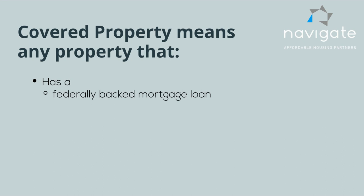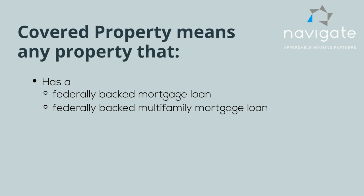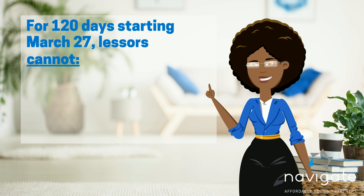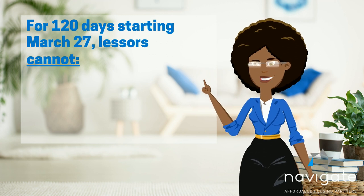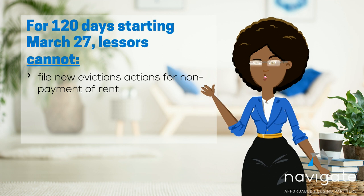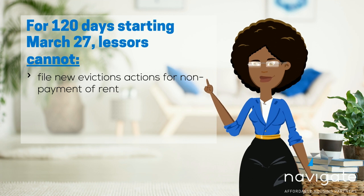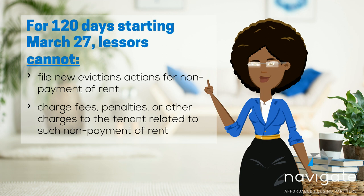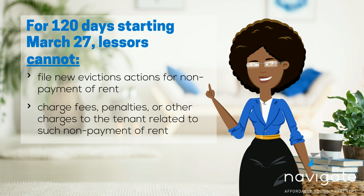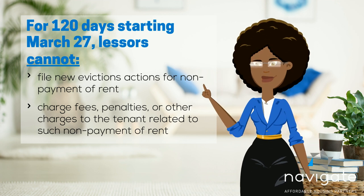It also includes any property that has a federally-backed mortgage loan or federally-backed multifamily mortgage loan. For 120 days starting March 27th, lessors cannot file new eviction actions for non-payment of rent or charge fees, penalties, or other charges to the resident related to such non-payment of rent.